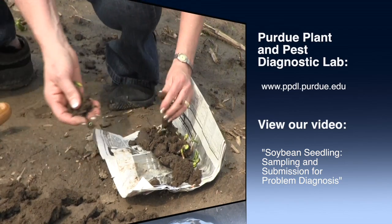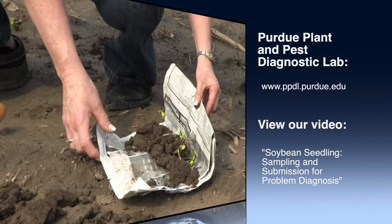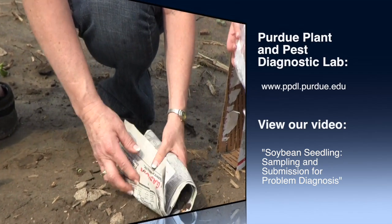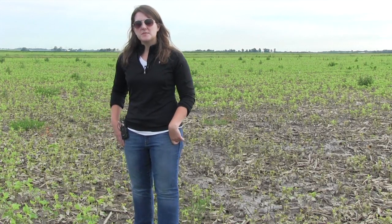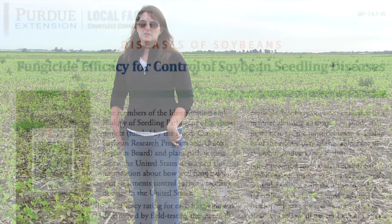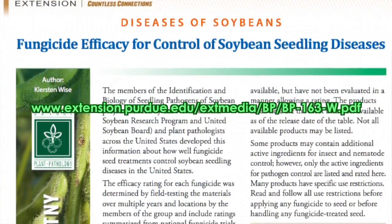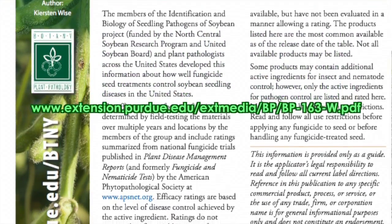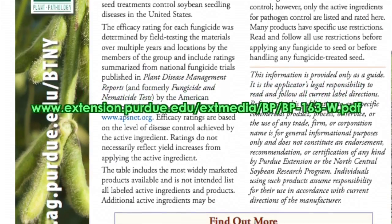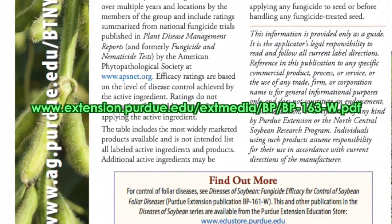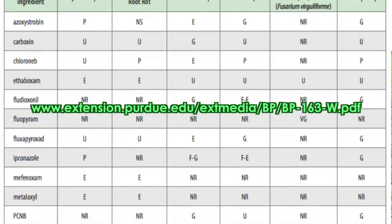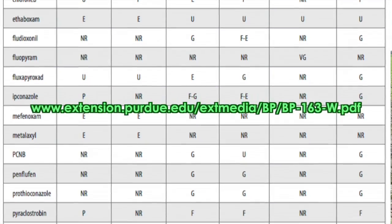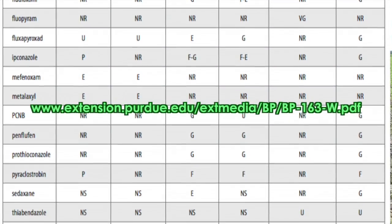Currently there are no in-season management options for seedling blights, but it is important to properly identify which seedling blights you have for future management decisions. If you confirm seedling blights in your field, the first step would be to select a fungicide seed treatment that's effective against the organisms present in that particular field. As plant pathologists we compile a list of available seed treatments and their efficacy against certain organisms every year. These are updated annually and available on our Purdue websites.